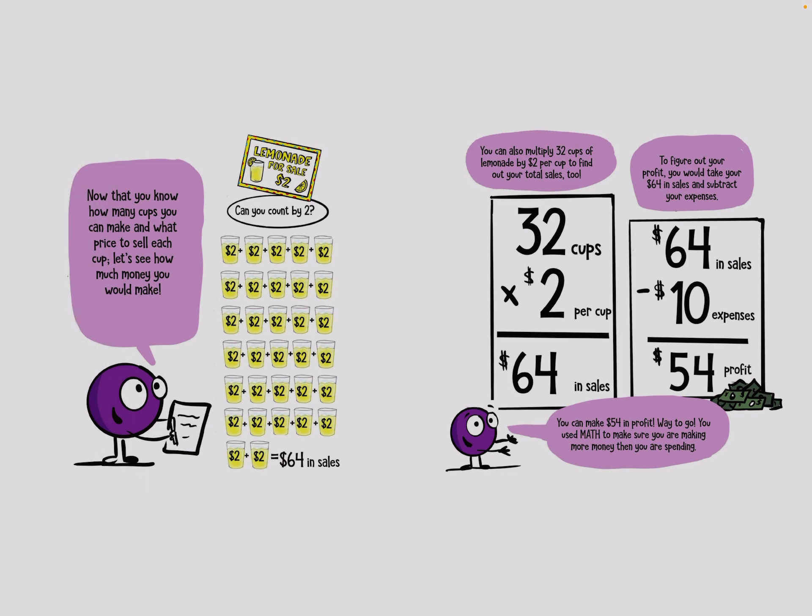Now that you know how many cups you can make and what price to sell at each cup, let's see how much money you would make. You can also multiply 32 cups of lemonade by $2 per cup to find out your total sales.